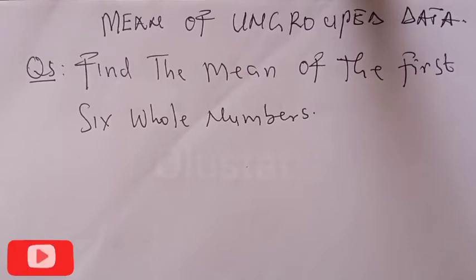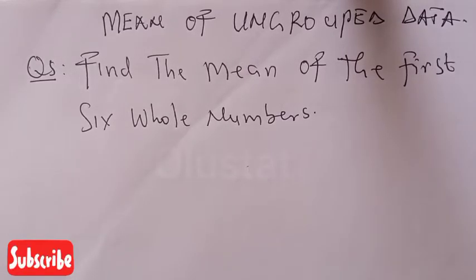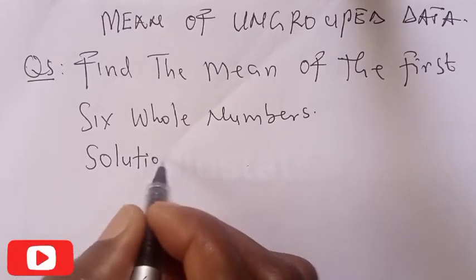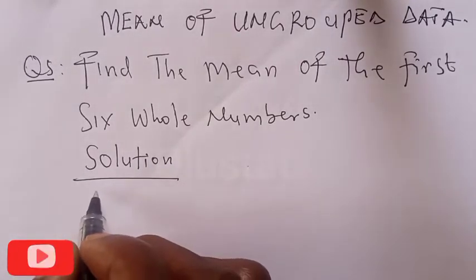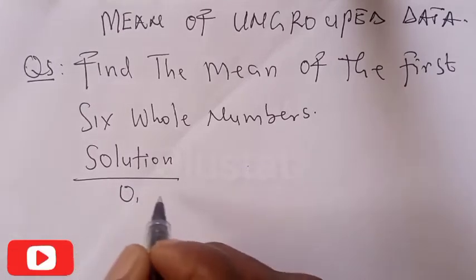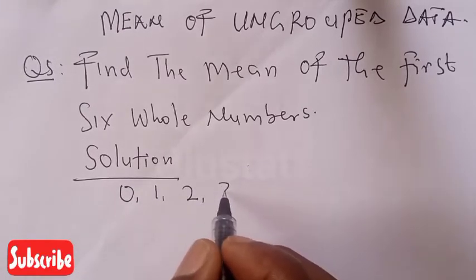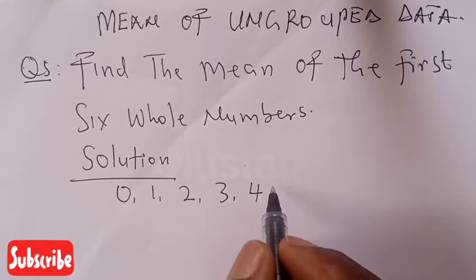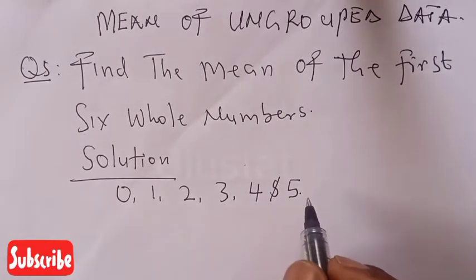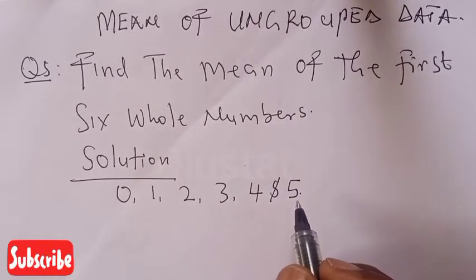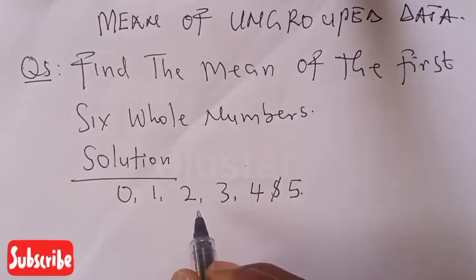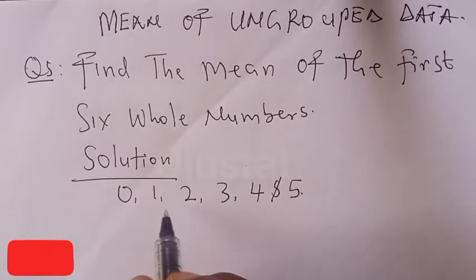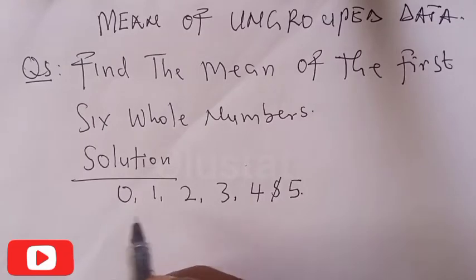In today's class we want to look at how we can find the mean of the first six whole numbers. Solution: the first six whole numbers are 0, 1, 2, 3, 4, and 5. And here are the observed values, that is the corresponding number of observations.